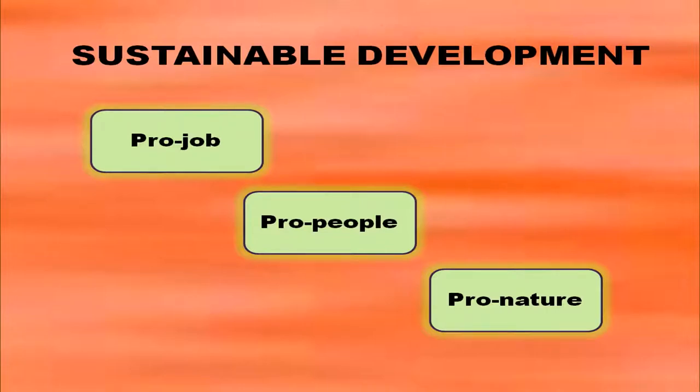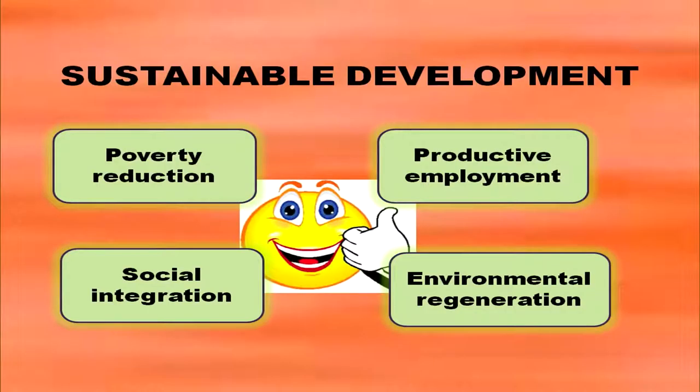Sustainable development has three dimensions: economical, social and ecological. It is pro-job, pro-people and pro-nature. That means it provides employment because output is increasing, it improves the quality of life of the people socially, and ecologically it conserves our resources. Sustainable development focuses on poverty reduction, productive employment, social integration and environmental regeneration.